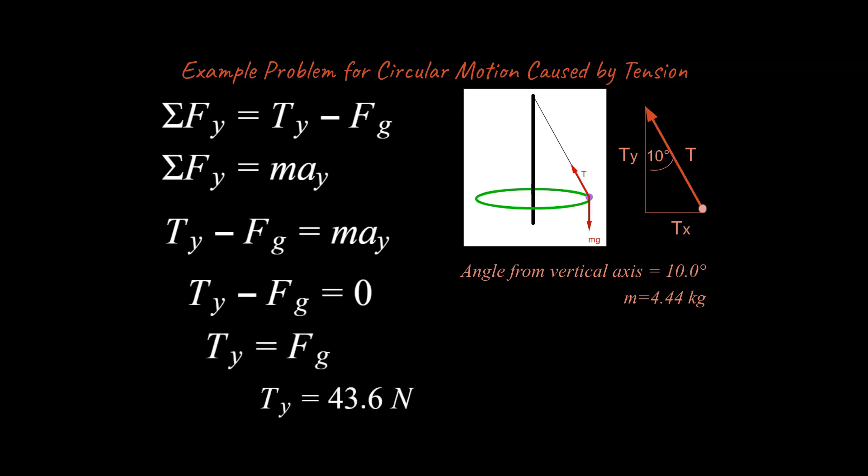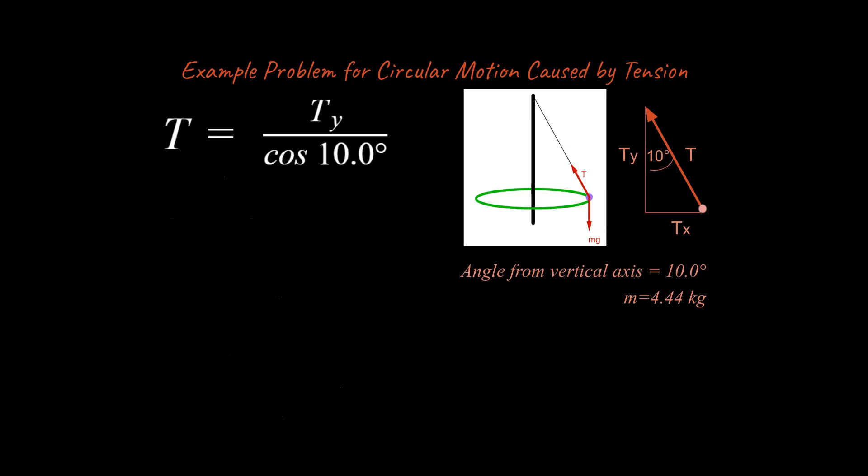And so we can move the Fg over and solve for the tension of the y. Once we get the tension of the y, then the rest of the problem is easy because of our previous work that we did with our components. If we know tension of y, we can plug that in up here and solve for the overall tension. So that's how you would go about solving a circular motion problem that's caused by tension. Hopefully this has been helpful. I'm going to be doing more screencasts and other topics for physics. If you have any comments down below, let me know and I hope you all have a great day.